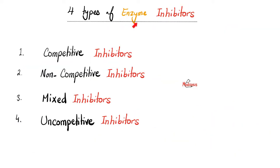We have four types of enzyme inhibitors: competitive, non-competitive — these are the most common two — mixed, and uncompetitive. Today, we're comparing between the first two.